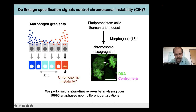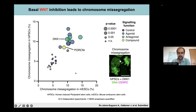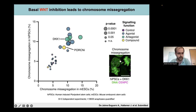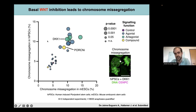We performed a signaling screening. By analyzing roughly around 18,000 anaphases upon different perturbations, we found really interesting data. We found that in basal conditions, in untreated cells — here I will depict the human pluripotent stem cells and here the mouse embryonic stem cells — these cells have roughly 5% probability to missegregate a chromosome during mitosis in basal normal conditions. Many of the morphogens that we tested actually do not have any impact. However, we found that some signaling cascades directly induced chromosome missegregation. For example, basal inhibition of endogenous WNT signaling through antagonist DKK1, or through the inhibitor of porcupine secretion protein, was directly inducing double the probability to missegregate chromosomes.